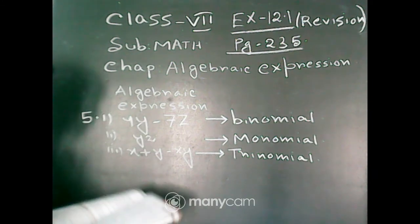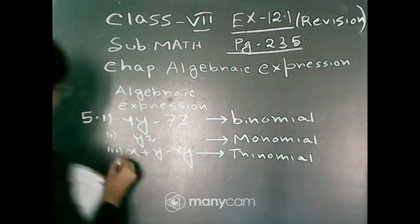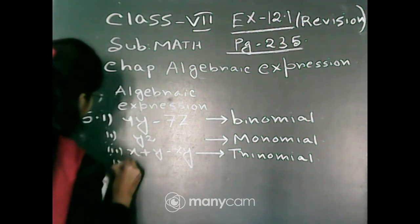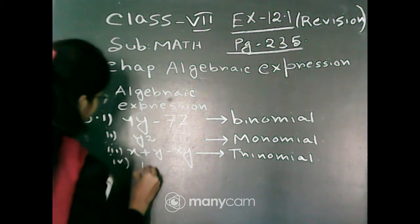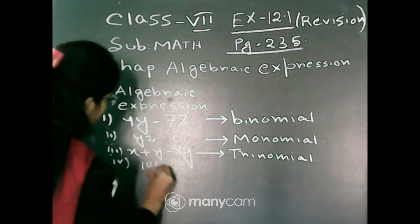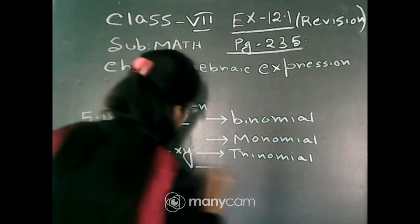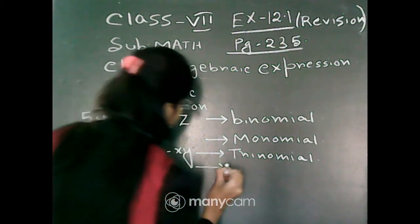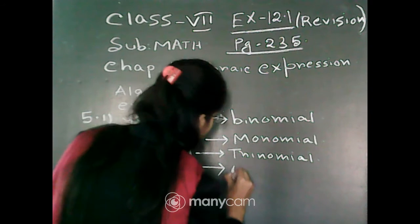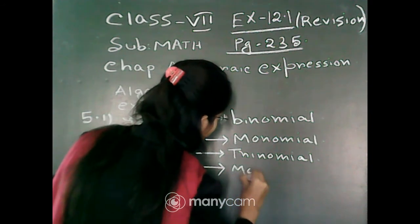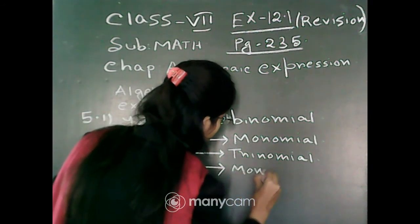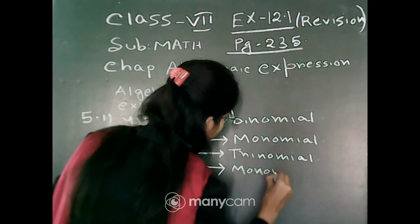Next, question number 4. The expression is 100. This is a constant term, and we can write this is a monomial.